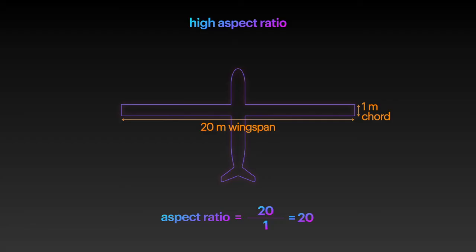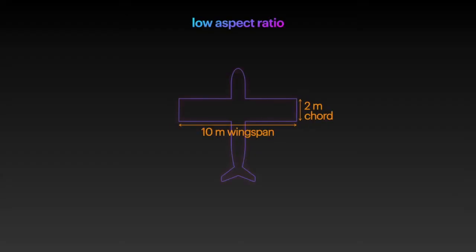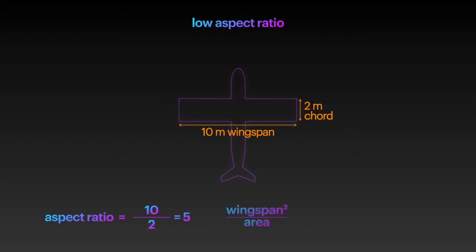This is an example of a high aspect ratio wing. A wing that has a 10 metre wingspan and a 2 metre cord has an aspect ratio of 5. This is an example of a low aspect ratio wing. You can also calculate the aspect ratio by this formula: the square root of wingspan divided by the wing area. As you can see, the solution is also 5.